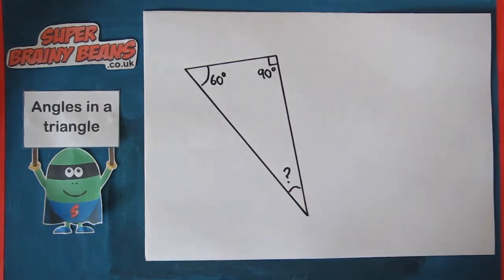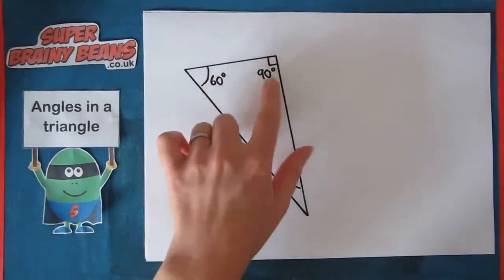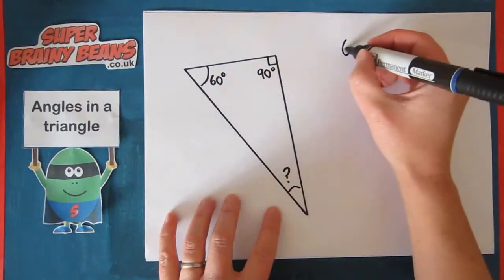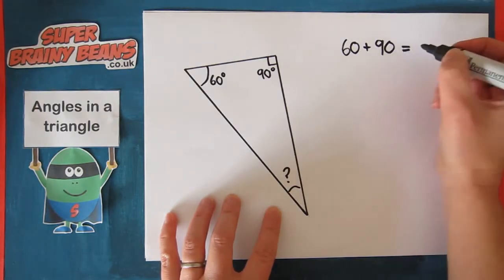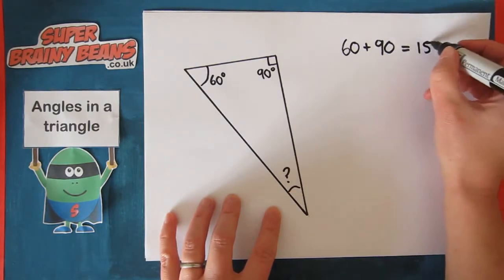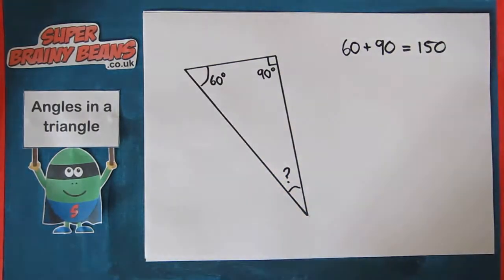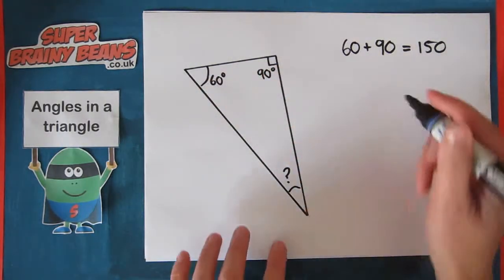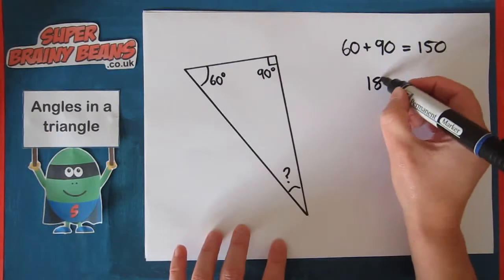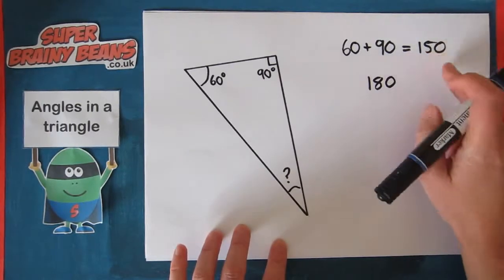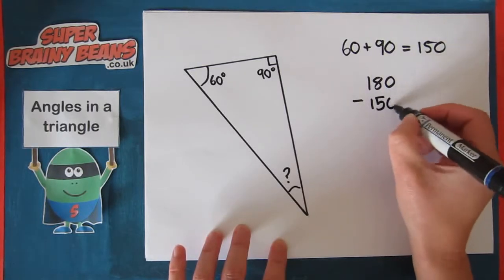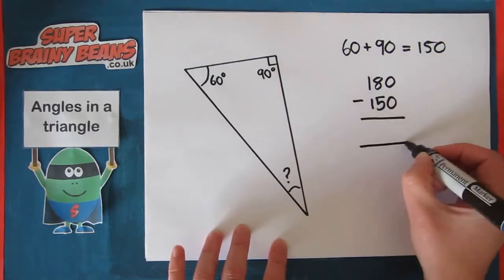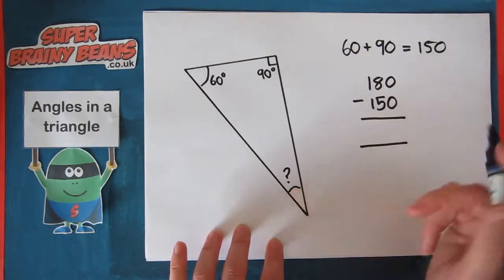So using our knowledge, we know if we add these two together, it's 150. Now, if we add all these together, it will be 180. So let's take 150 away from 180. The answer will give us this angle.